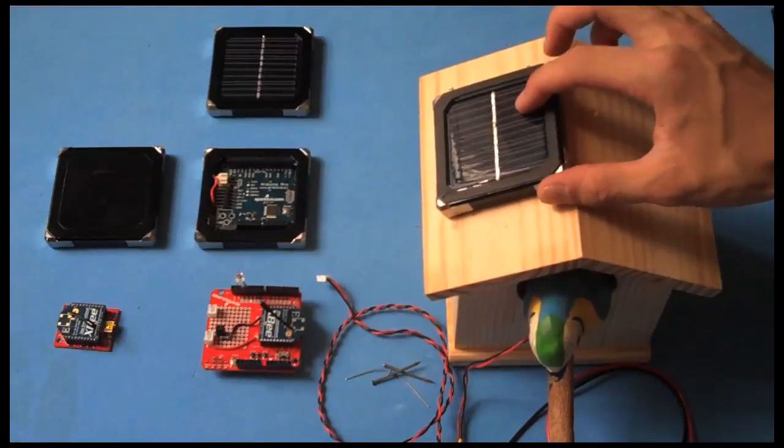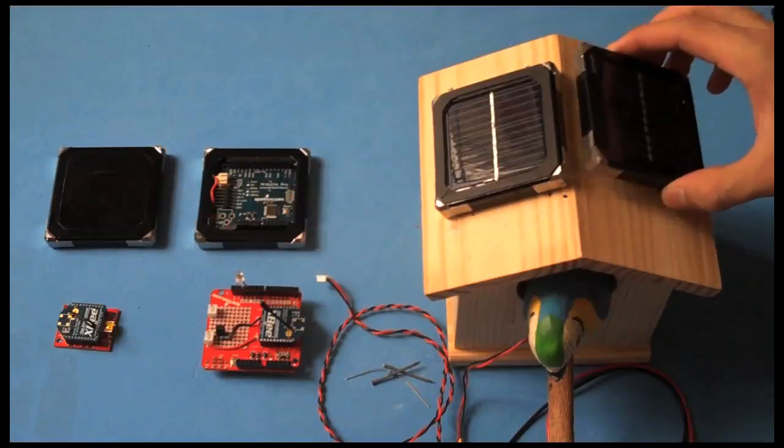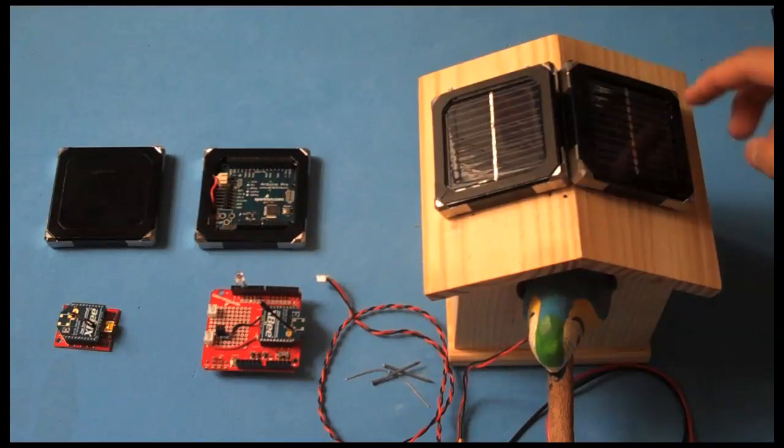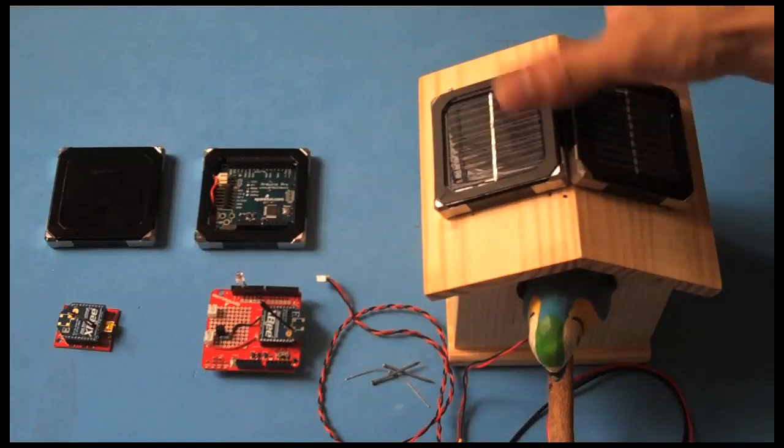So you can just add your solar panels like so. These will be in parallel and you can call this positive and negative if you like.